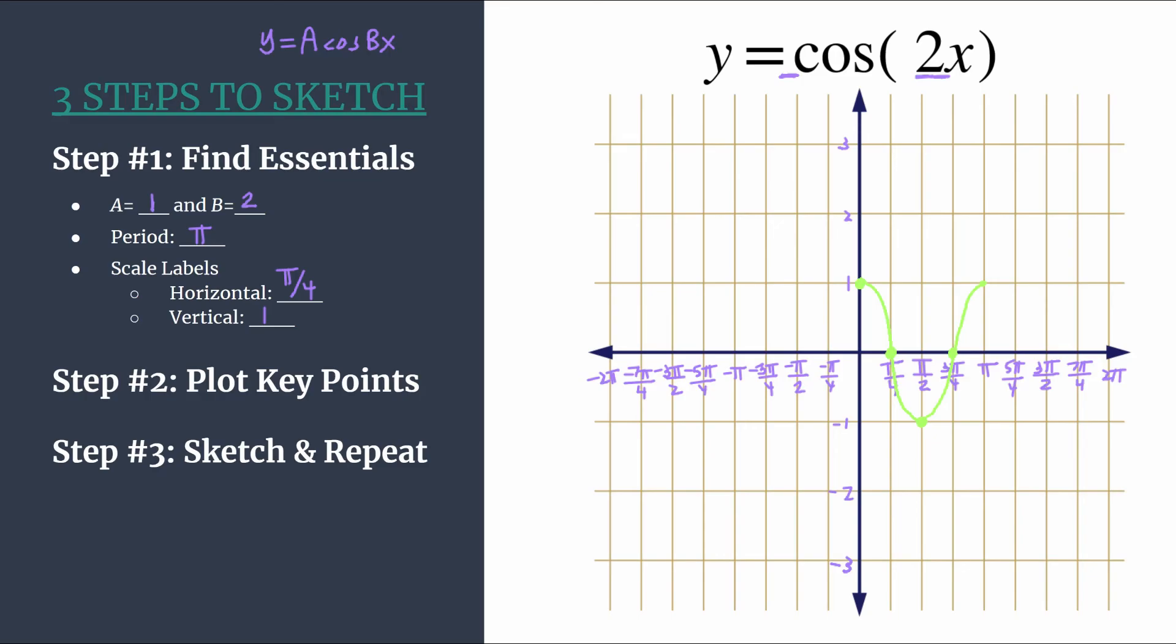So now let's repeat this and get a really nice graph that goes for several cycles. The great thing is you just repeat the same pattern that you just did in green. So I'll use a different color just so we can distinguish from the original. But we do the same pattern. So maximum, zero, minimum, zero. Repeat. So we have a nice cosine curve there.